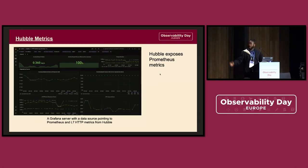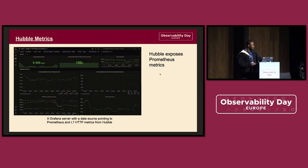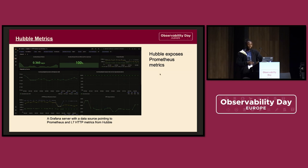This diagram showcases the Hubble, Prometheus, and Grafana relationship. It's basically a Grafana server with a data source pointing to Prometheus, and all seven HTTP metrics from Hubble. Grafana has a data source plugin for Hubble, so you can have this done on your Grafana dashboards.